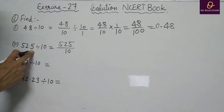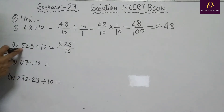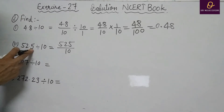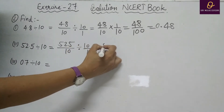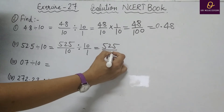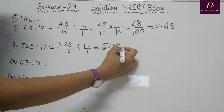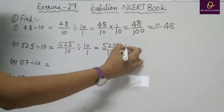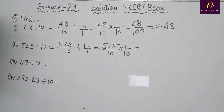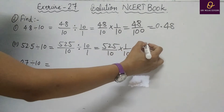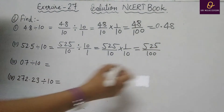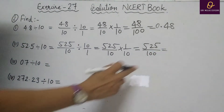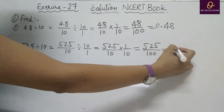Part B: 52.5 divided by 10. Remove decimal — look at digits after the decimal point, that is on the right side, which is 1 digit — so write divided by 10. We get 525 divided by 10, divided by 10 by 1. Divide changes to multiply and 10 by 1 becomes 1 by 10 (reciprocal). That gives 525 divided by 100. Put decimal after 2 digits: answer is 5.25.